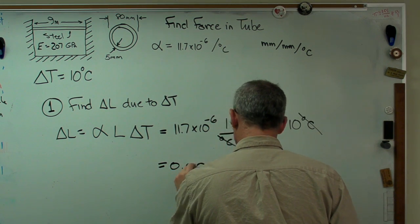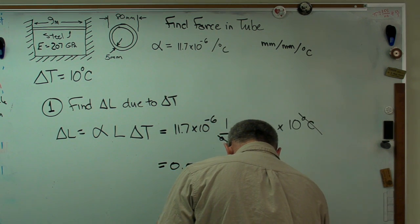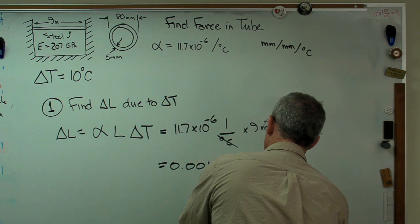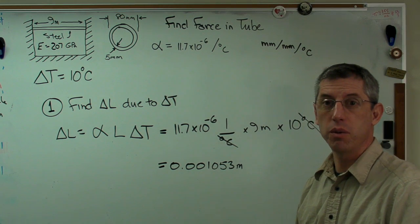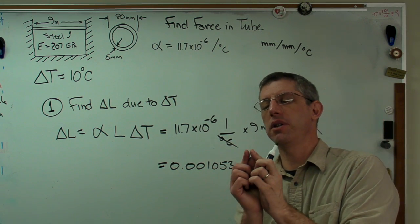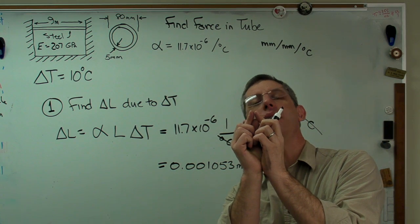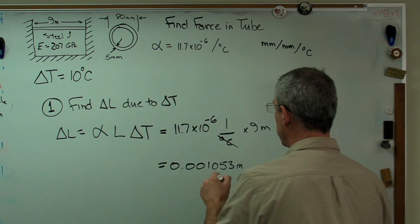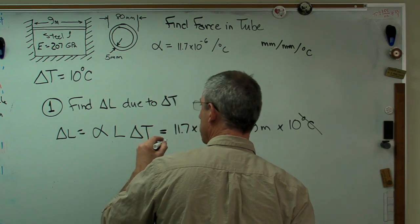And you get 0.001053 meters. That's tiny, that's 1.05 millimeters. So even though the bar is 9 meters long, it's got that little change in length. I'm going to write that up here because I'm going to run out of space on my board here.